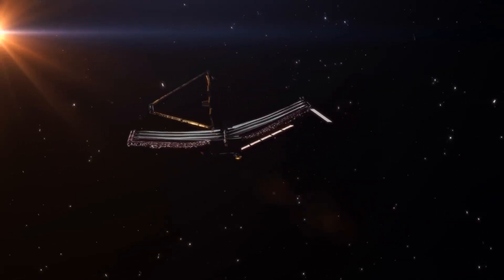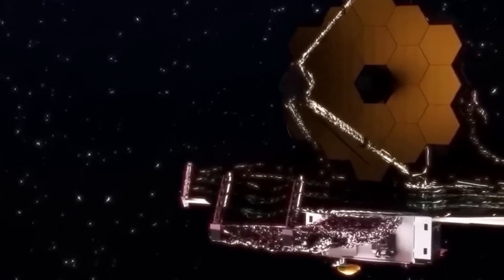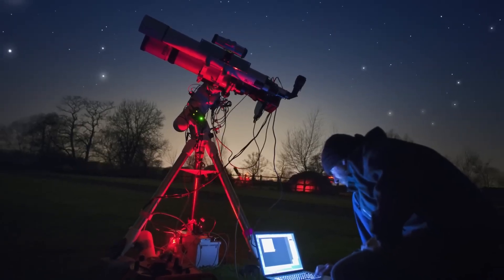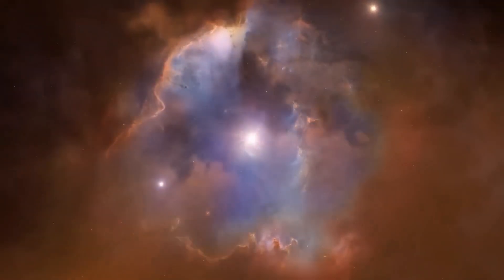The telescope zeroed in on Proxima Centauri b, the closest exoplanet to our solar system, and found strange bright lights. Could these lights be signs of another civilization? Let us explore how the James Webb Telescope uncovered these phenomena that will change our understanding of the universe.